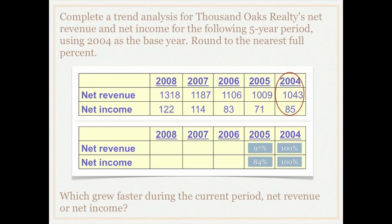Now let's see if we get the same answers for the next three years. In 2006, the trend percentage for revenue should be 106 percent and net income should be 98 percent. This tells us that in 2006 our net revenue was 106 percent of what it was in 2004 — meaning it increased 6 percent since 2004. In 2007, net revenue trend percent was 114 percent and net income was 134 percent.